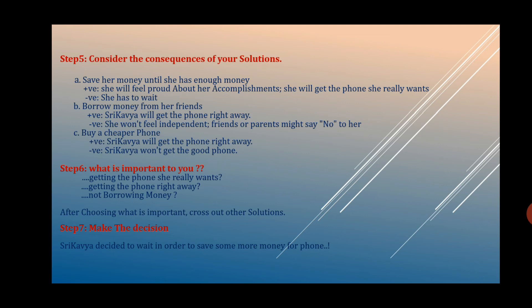Consider the consequences in two manners — positive and negative. For the option of saving her money: in the positive manner, she will feel proud about her accomplishment and she will get the phone she really wants. In the negative manner, she has to wait.